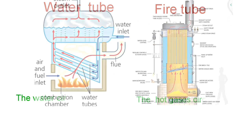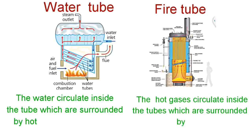In case of a water tube boiler, the water circulates inside the tube which are surrounded by hot gases from the furnace, whereas in case of a fire tube boiler, the hot gases circulate inside the tube which are surrounded by water.